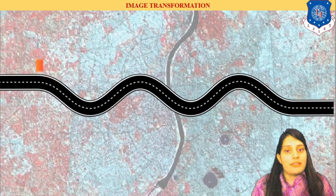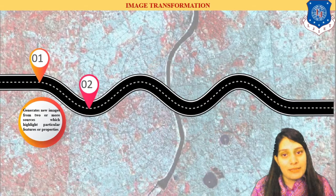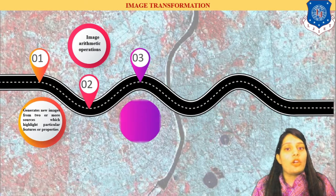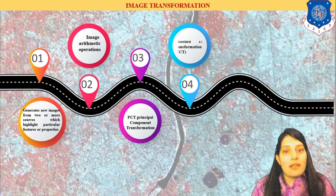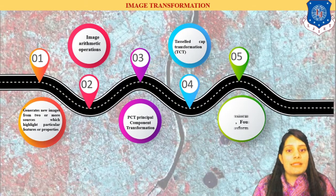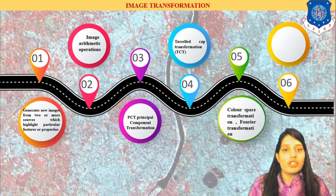Image transformation is done so that I can particularly analyze the feature class I want to analyze. We have image arithmetic operations applied to the pixels of the image for analysis. Then we have PCT — principal component transformation — which compresses data and gets the information in the required band zone. We also have tasseled cap transformation for vegetation indices analysis. Additionally there is coverage of image, color space, Fourier transformation, and image fusion.